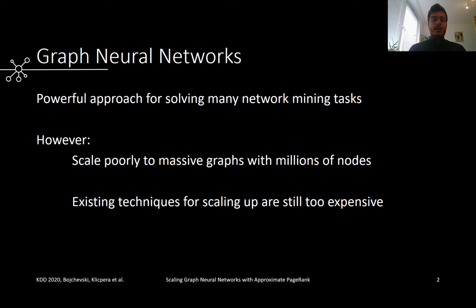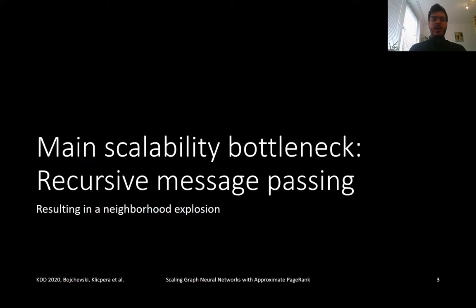Of course, we are not the first to tackle this problem, but existing approaches are still too expensive in practice. So where does the main scalability bottleneck come from? A large fraction of GNN models rely on a message-passing procedure. This procedure is recursive and results in a neighborhood explosion, since the size of the neighborhood required to obtain the prediction for a given node grows with each layer.